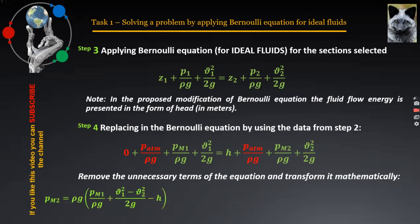It remains to be replaced in the equation with the numerical values of the parameters involved in it. And after the calculation is performed, the final answer of the task is obtained. In this case, the required manometric pressure, PM2 will be equal to 141,042 Pa, or approximately 141 kPa.